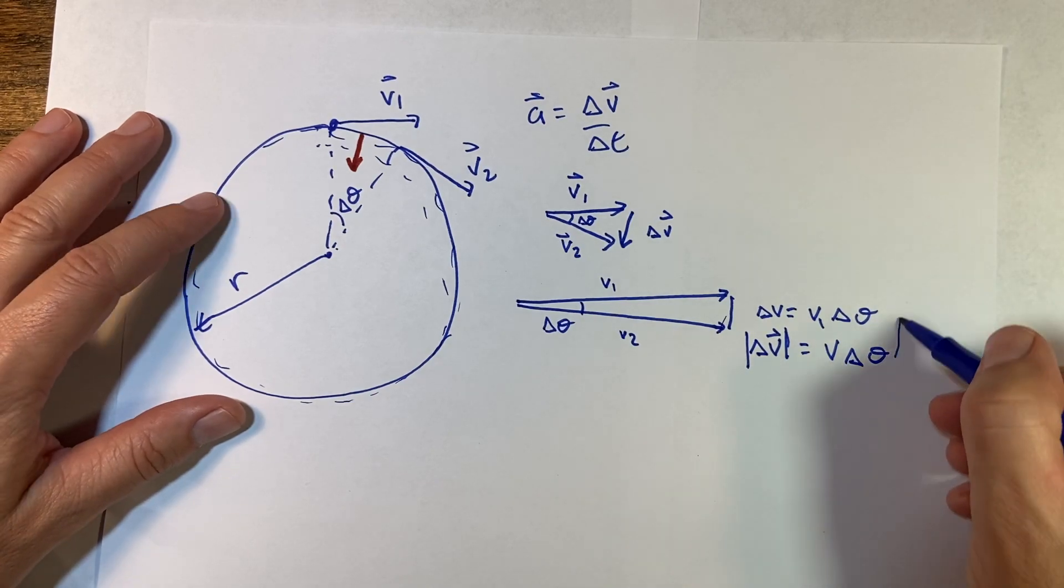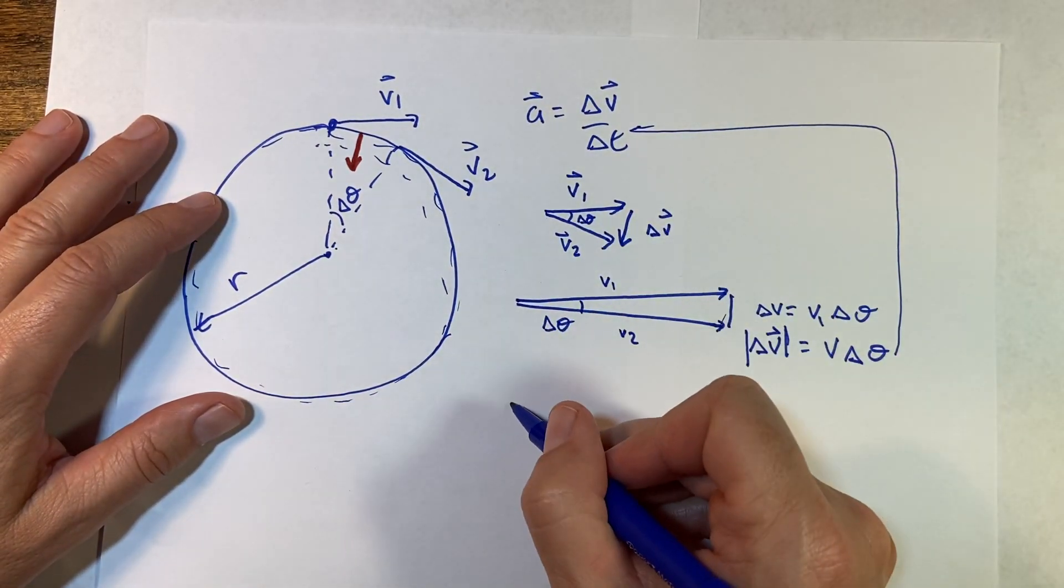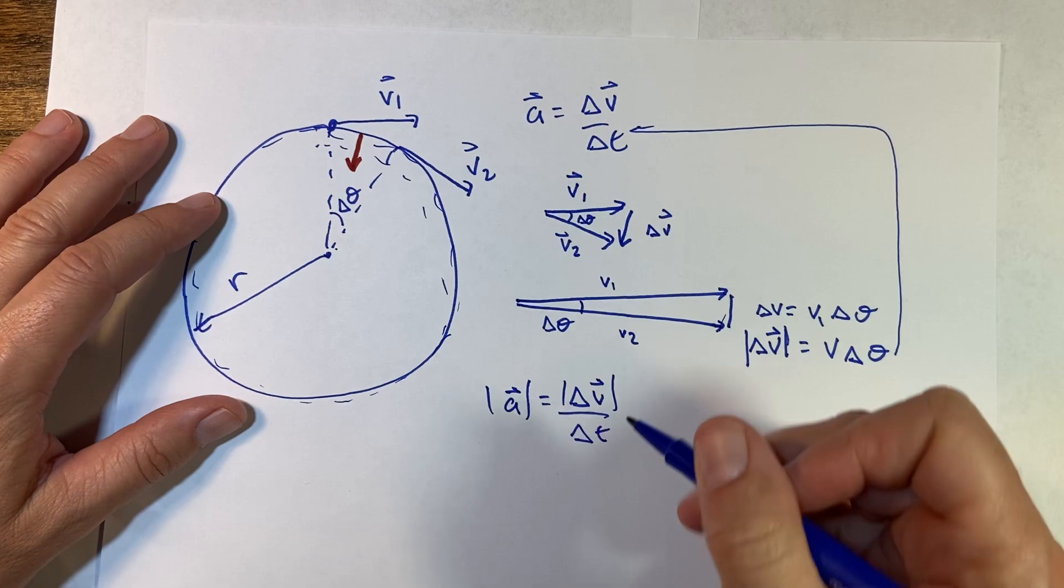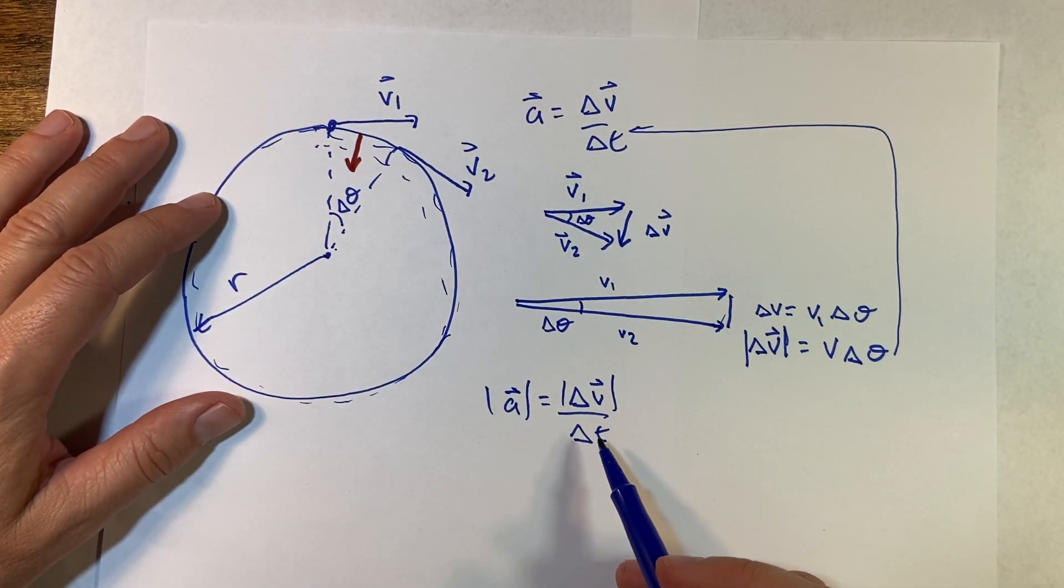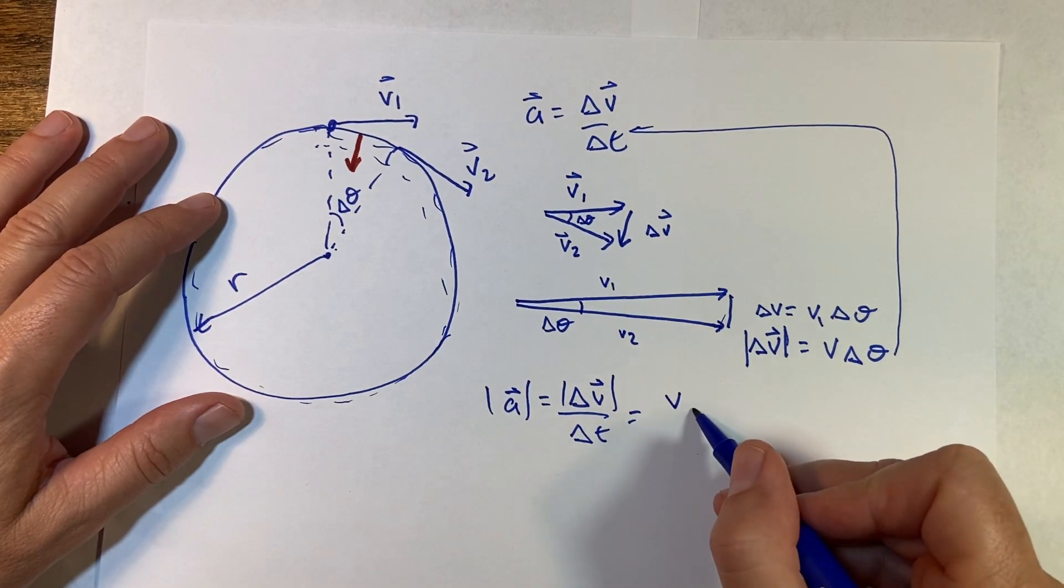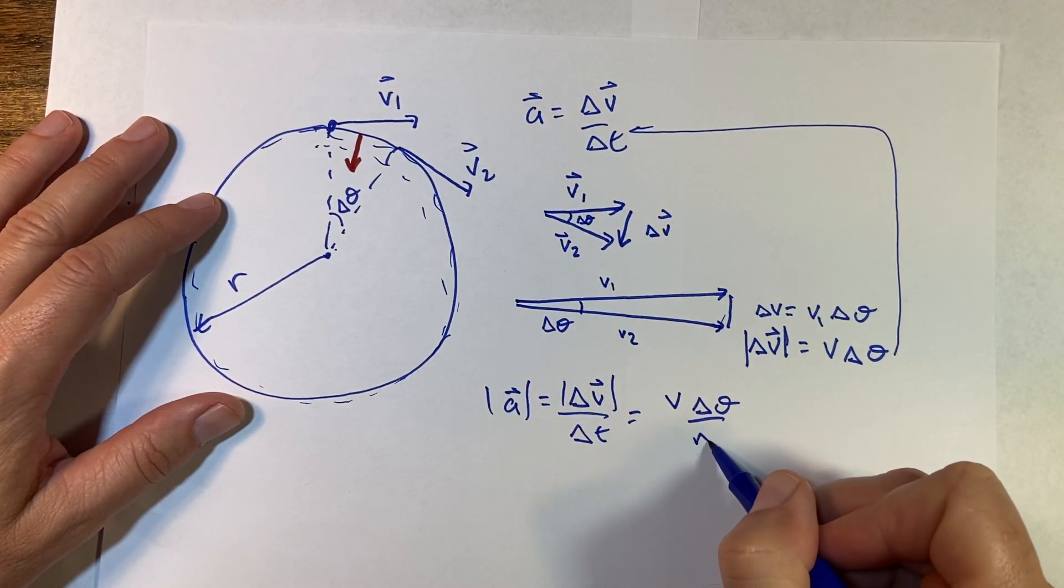Now I can put that in up here, so I can say the magnitude of the acceleration is the magnitude of the change in velocity over the change in time. I can put in v delta theta over delta t.